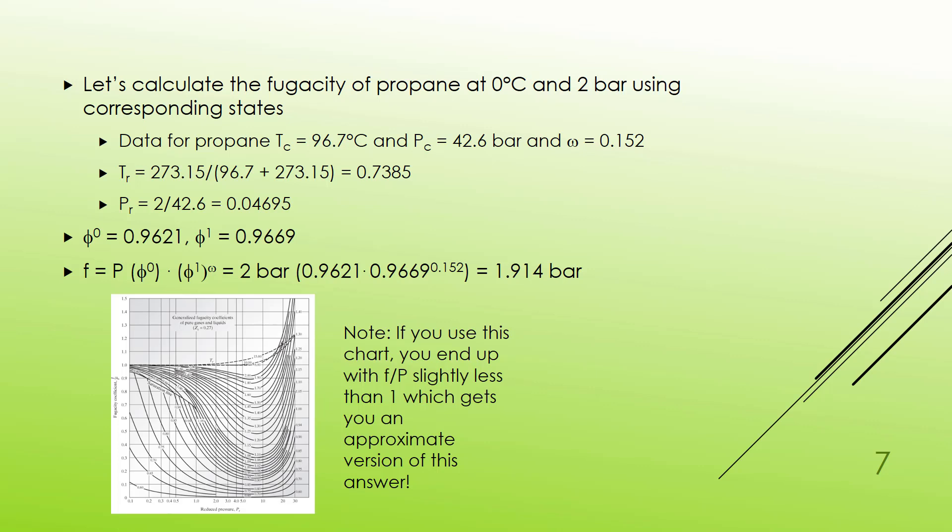So if I wish to calculate F, what I need to do is take phi 0 and phi 1 to the omega power, multiply those answers times P, and that will get me F. This just all comes from the laws of logarithms and the definitions of fugacity coefficients. So in this particular case I get 2 bar times 0.9621 times my phi 1, 0.9669 to the 0.952 power, and my answer is 1.994 bar, somewhat less than what we got using the data tables.